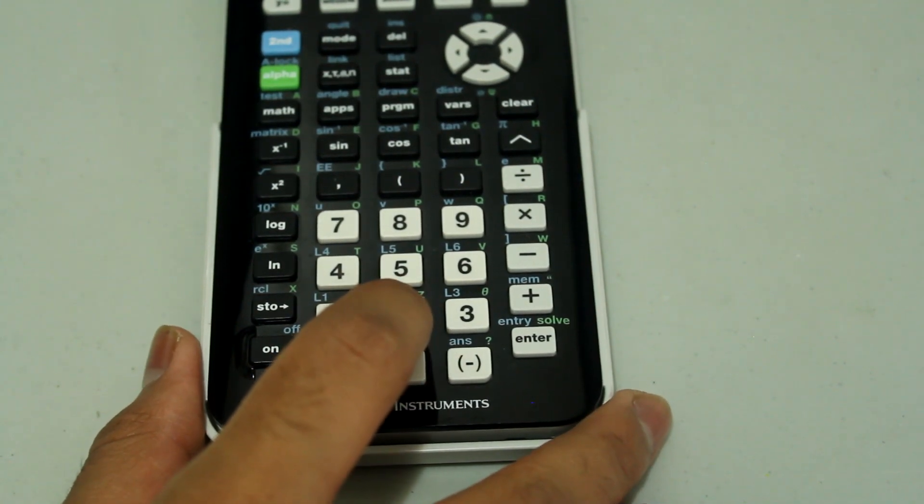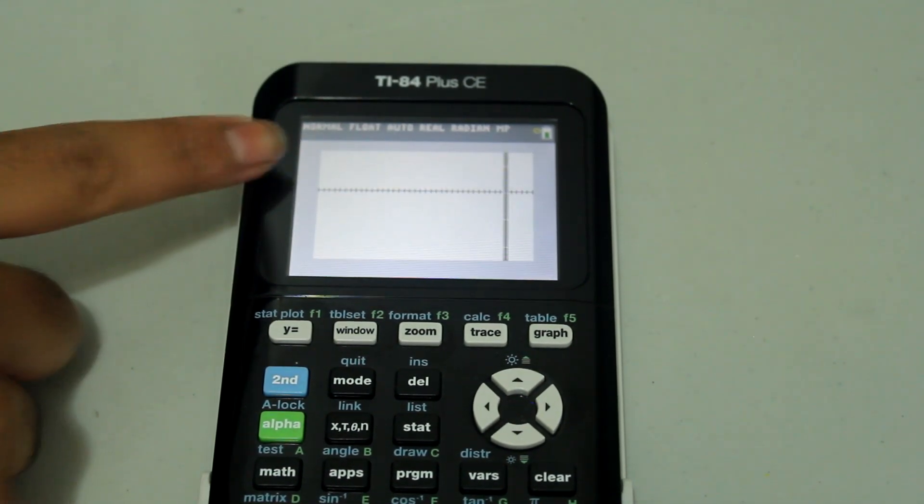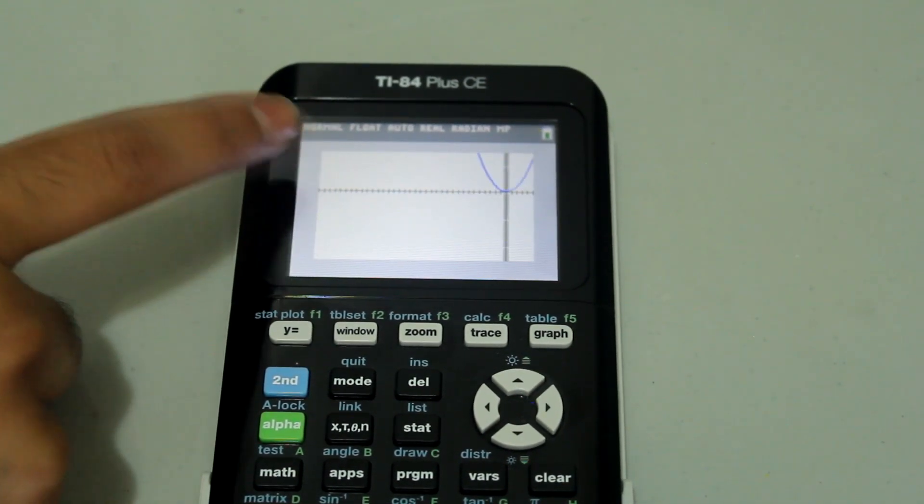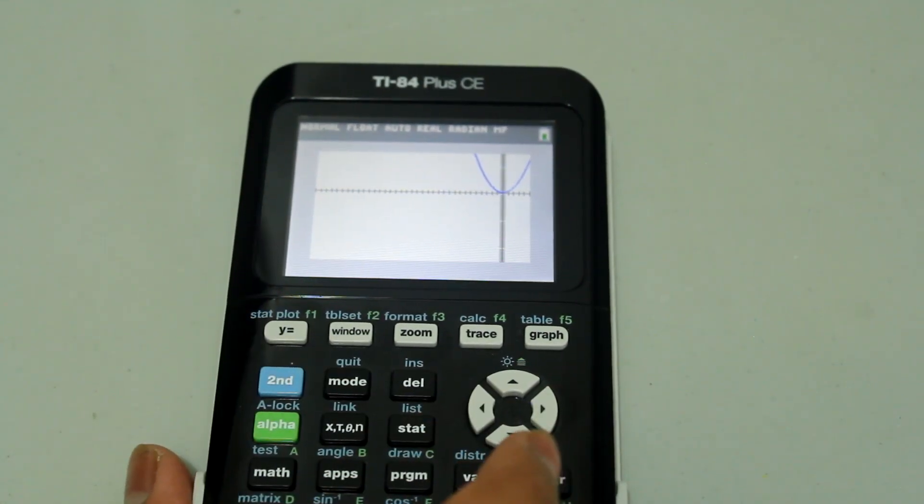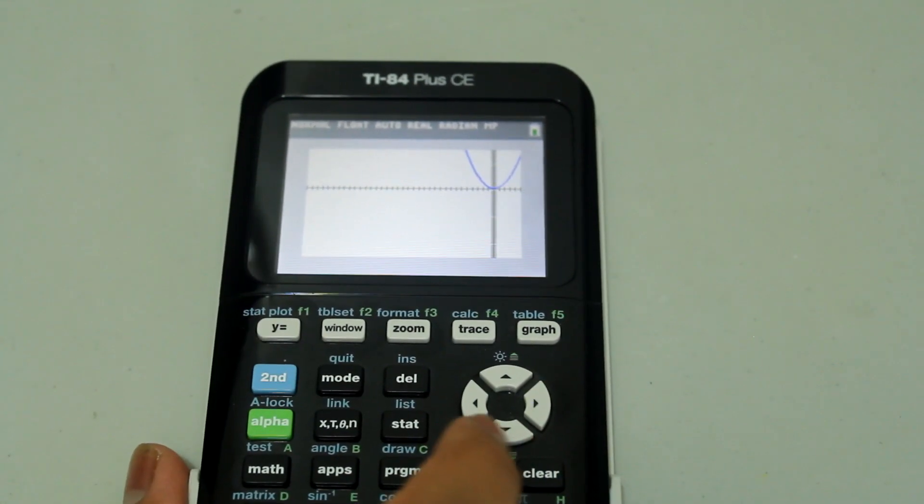And that will select the second option. And now you see that window is saved. Now let's say you change the graphing window to something else.